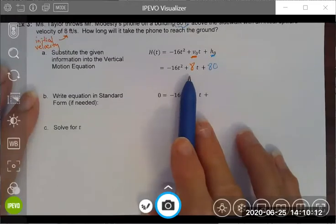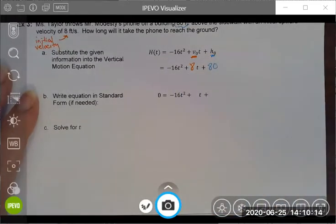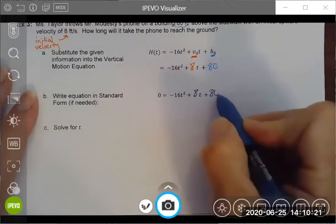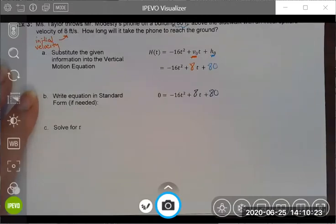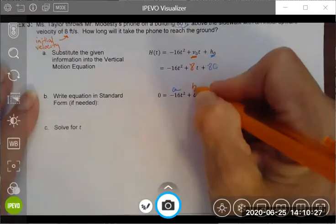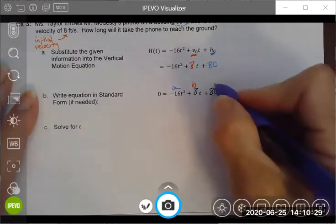All right, so in this particular case, I guess I wanted myself to write it again. In this case, my a value is this one, my b value is 8, and my c value is 80.